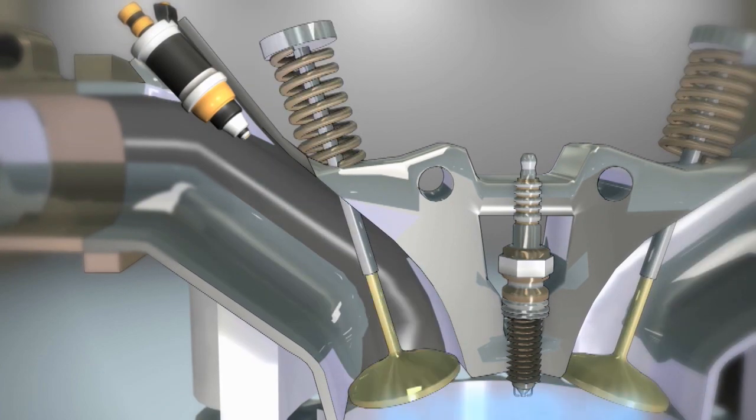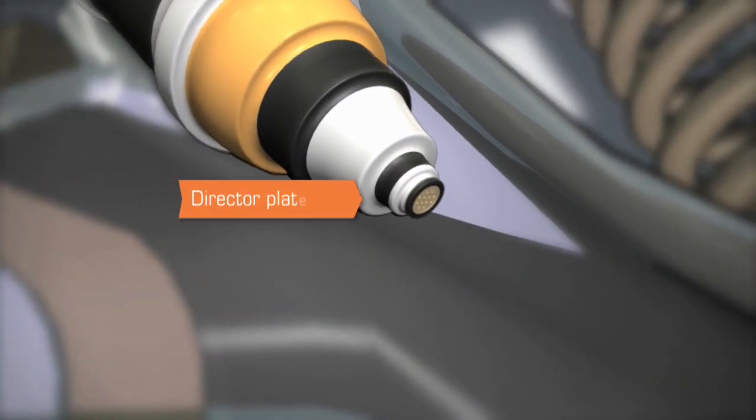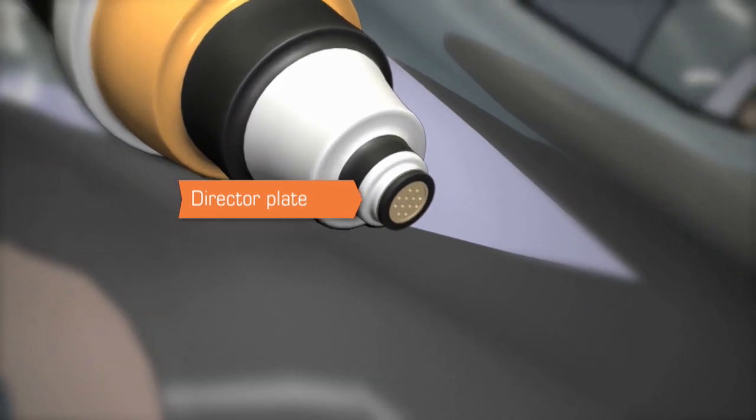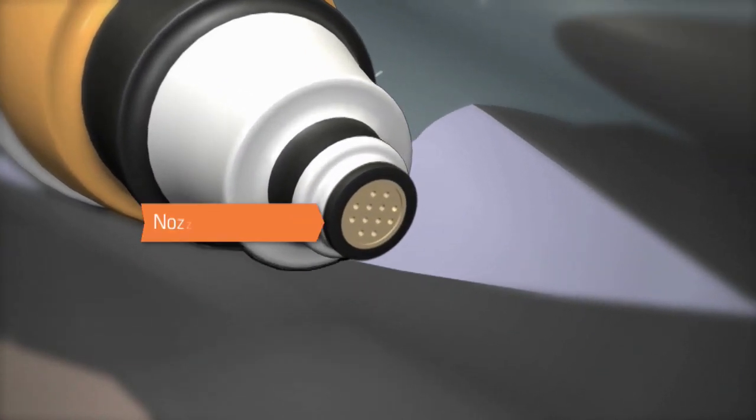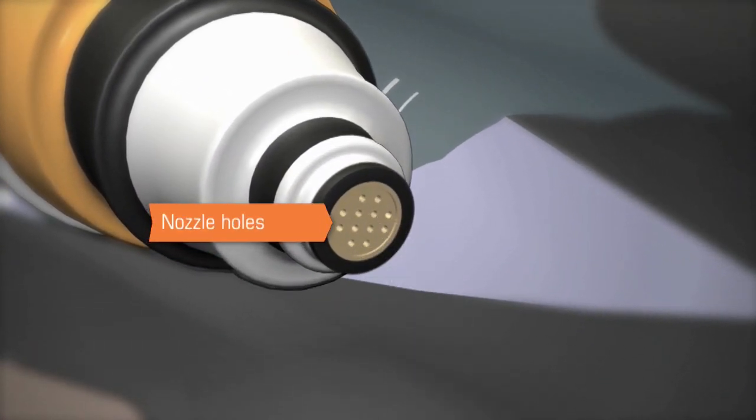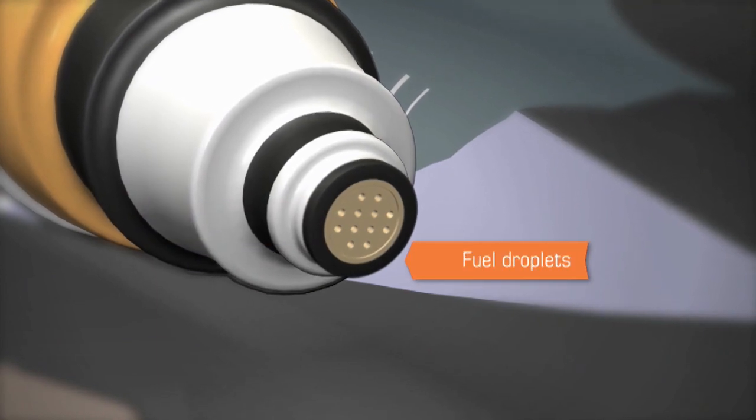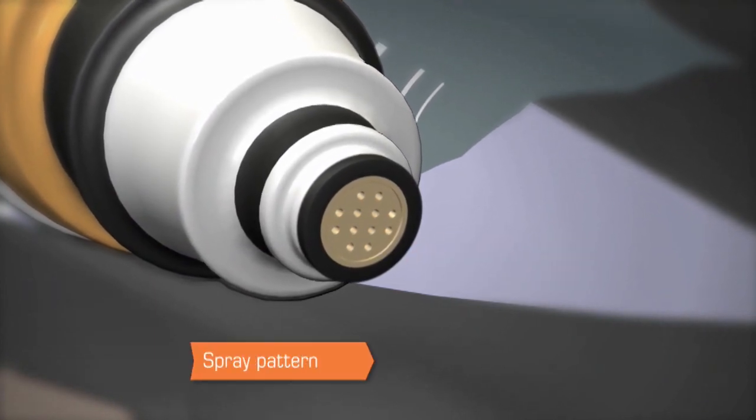Today's injectors contain many tiny holes on what is known as a director plate. Often less than the diameter of a human hair, these small nozzle holes create very small fuel droplets and can even be angled to create a precise spray pattern.